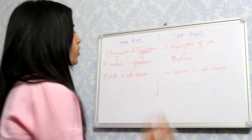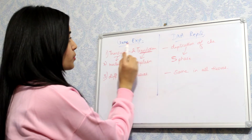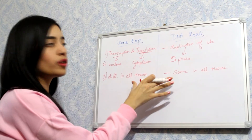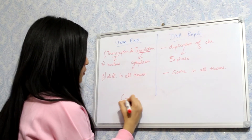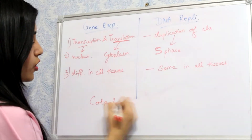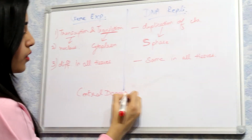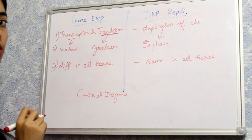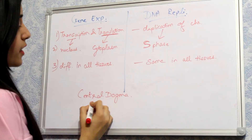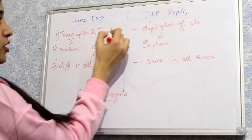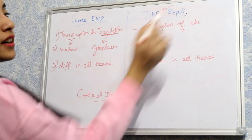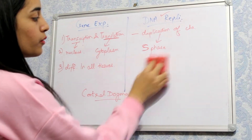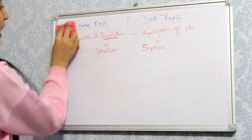If we see the comparisons between gene expression and DNA replication, those are the differences. And if we see the difference between gene expression and central dogma: gene expression consists of transcription and translation, whereas central dogma consists of transcription, translation, and DNA replication. This is the major difference between these two.